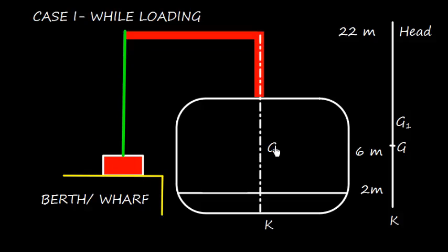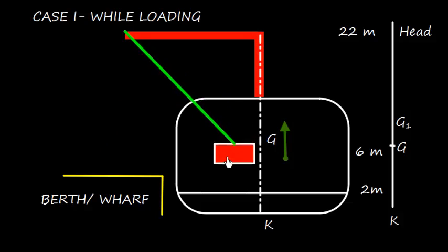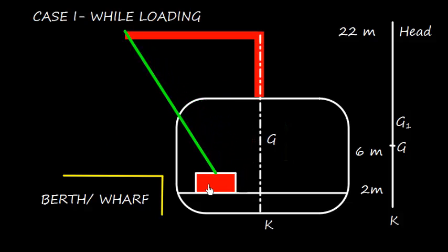The center of gravity is here at G. However, when the weight is hanging, the center of gravity will shift upward because the weight is acting at the head. However, once the weight is placed at the tank top, which is downward, the center of gravity will again come down.